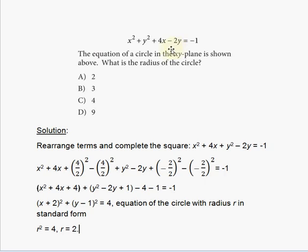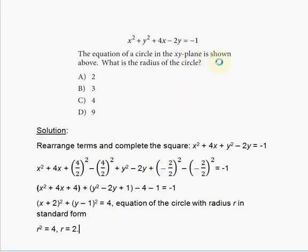It gives you a nonlinear equation — you can see squares pertaining to the variables — so it's the equation of a circle in the XY plane. The question asks: what is the radius of the circle?